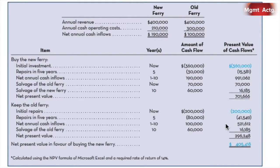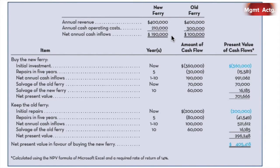Under the new ferry, revenue is $400,000. If we kept the old ferry it would still be $400,000, but look at the change in operating costs. Under the old ferry it would be $300,000 in operating costs for an annual cash inflow of $100,000. But if we get the new one, our costs drop 30% — they drop to $210,000 — so our net annual cash flows increase to $190,000. But we have to buy a new boat.